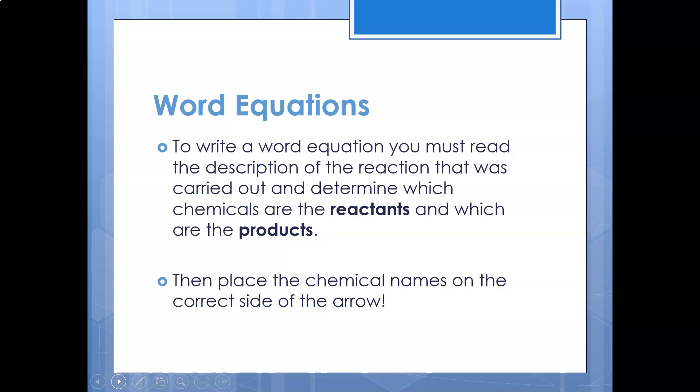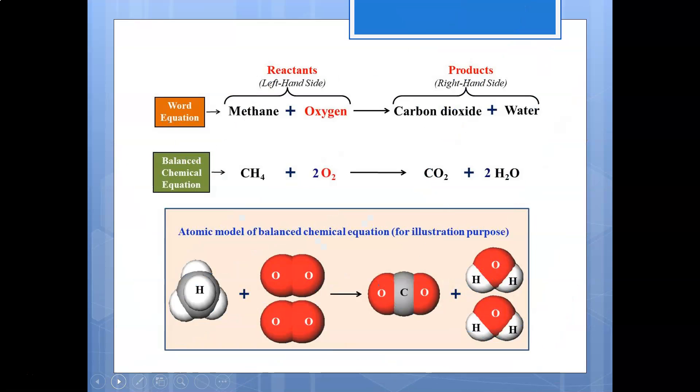We've got two different ways of writing this. We've got what we call our word equation, and that's where we actually write the actual names of our reactants and our products. Then we place an arrow in the same as we would if we're using the symbols but we're just using words in this case. You can see your word equation at the top here for our reaction of methane and oxygen. That's a combustion reaction.